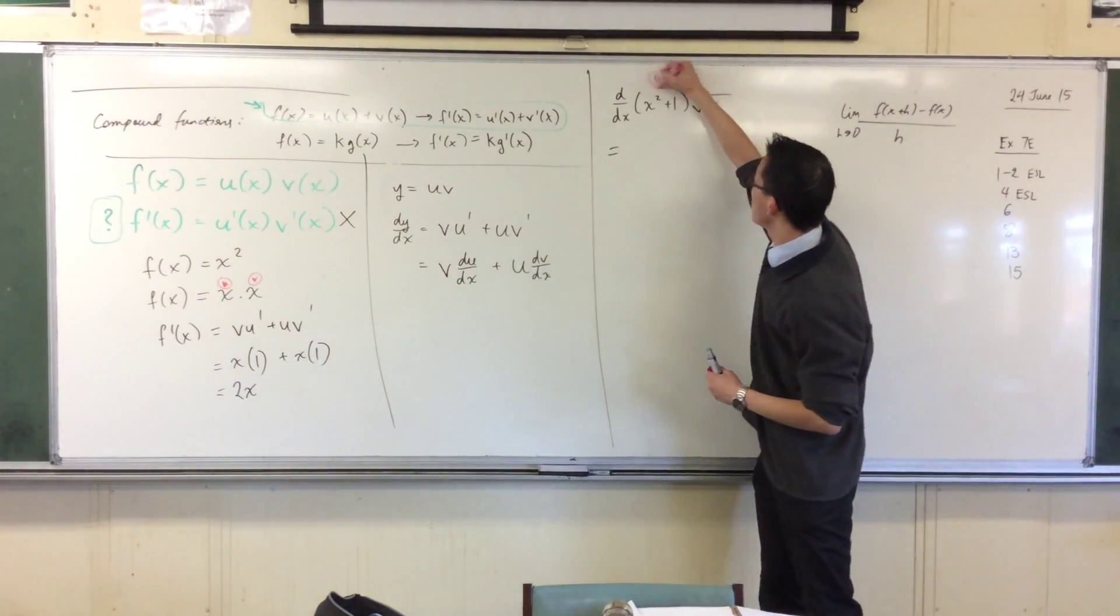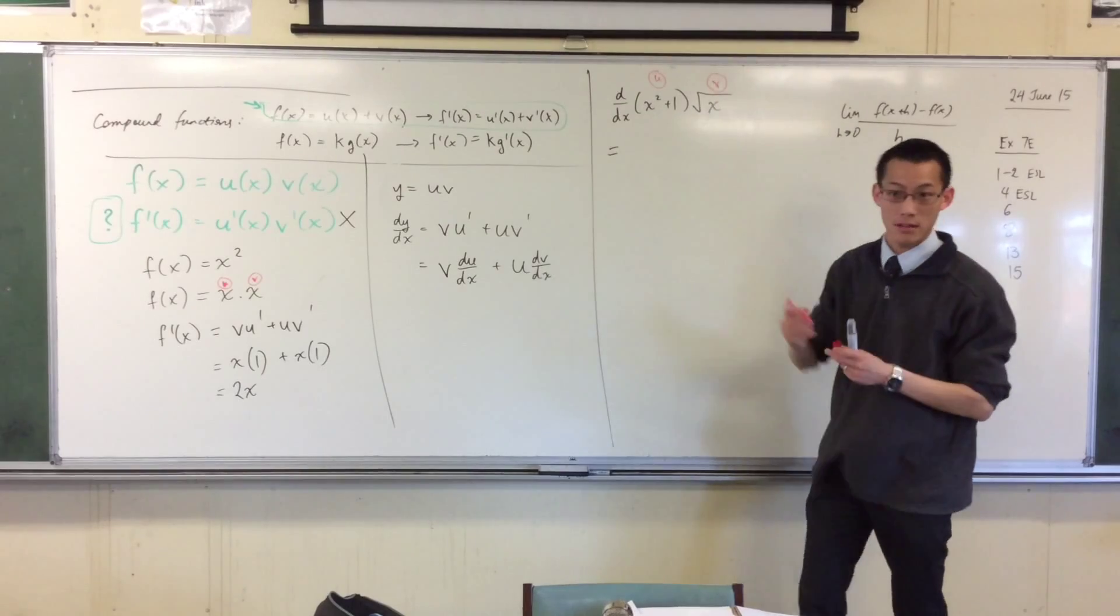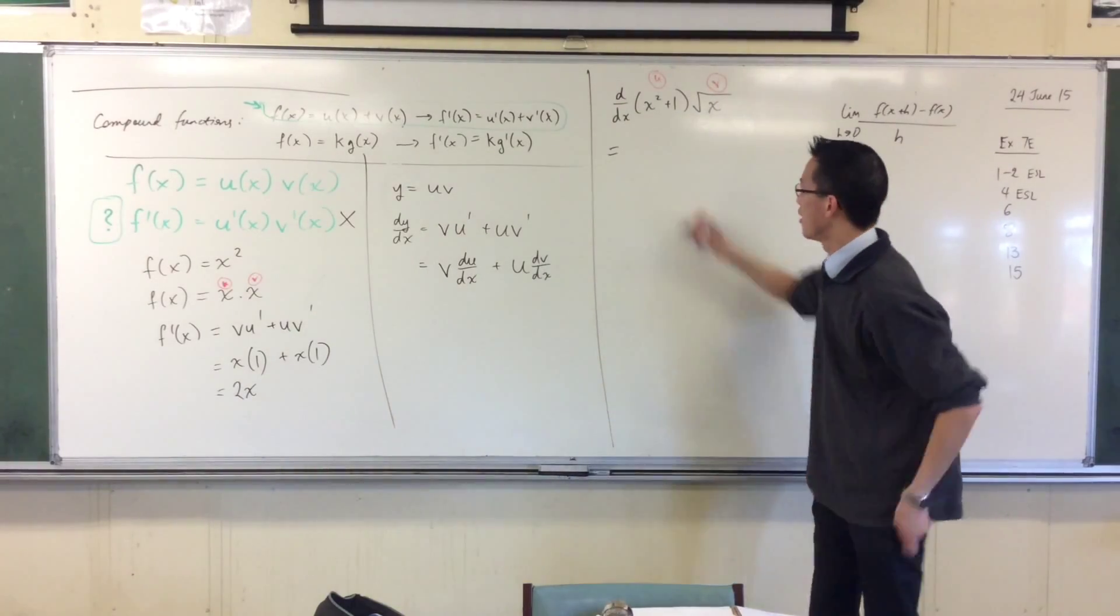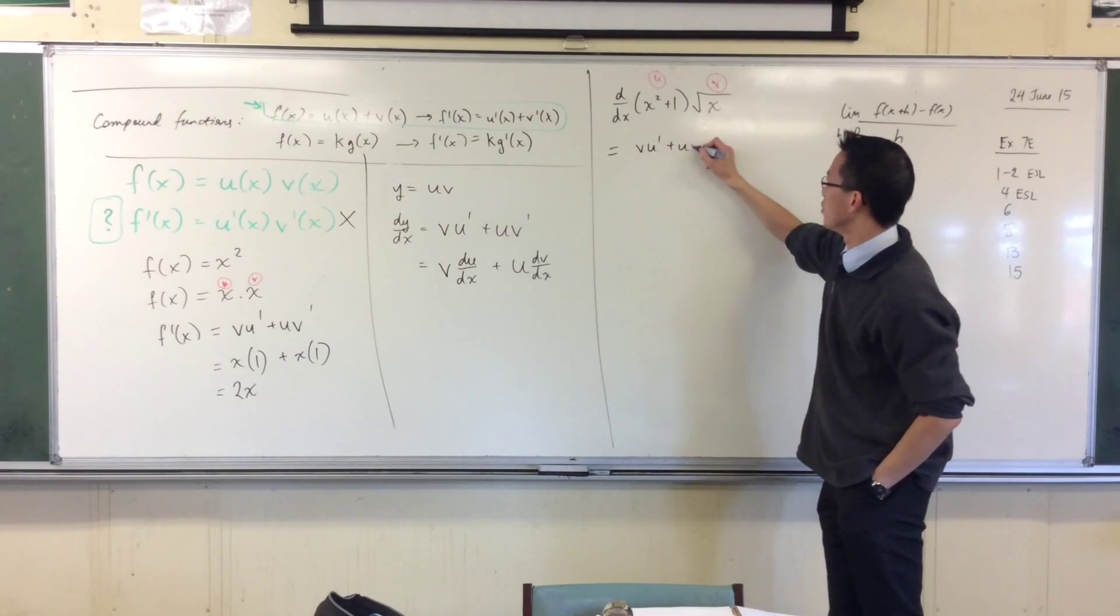Let's treat this as a u and a v, okay? So you designate one of them u, you designate the other one v, okay? And then let's go through this v u dash plus u v dash.